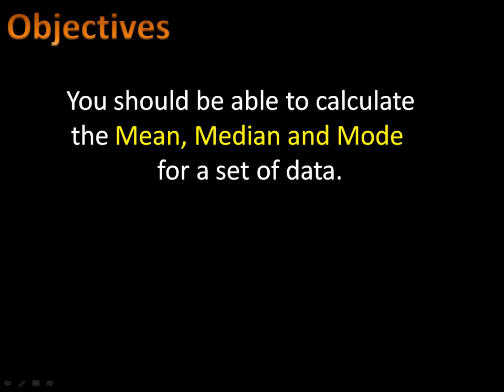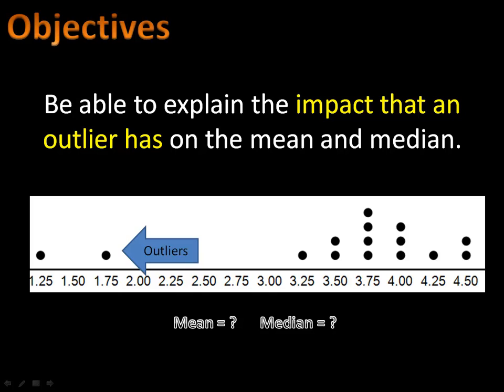In today's lesson, we're going to take a look at how we can describe sets of data. We'll begin by calculating the mean, median, and mode. Then we'll discuss outliers, which are values that are much smaller or much larger than the rest of the values that we're working with. We'll understand the impact that those have on both the mean and the median.